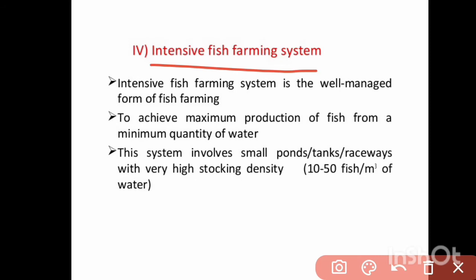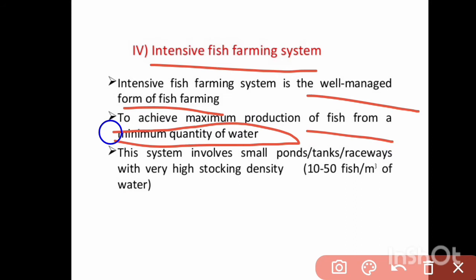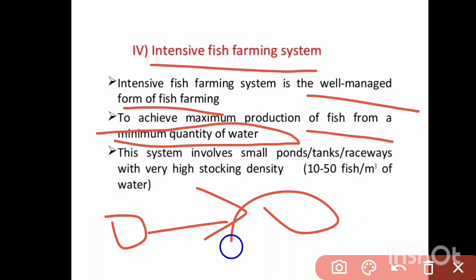Next is intensive fish farming — the most well-managed form of fish farming. The goal is to achieve maximum production of fish from a minimum quantity of water. This system involves small ponds, tanks, and raceways with very high stocking density.